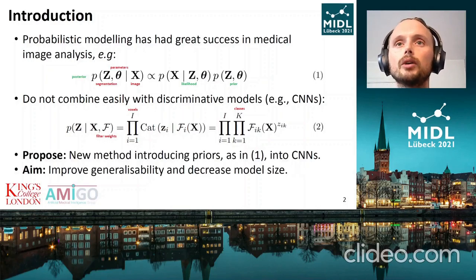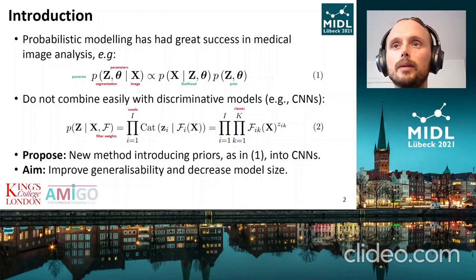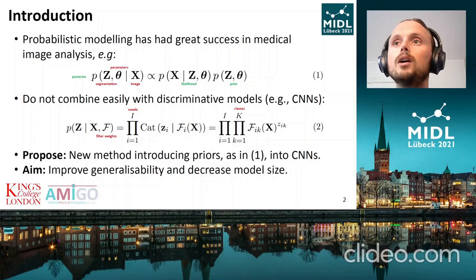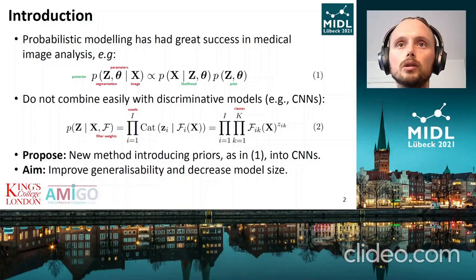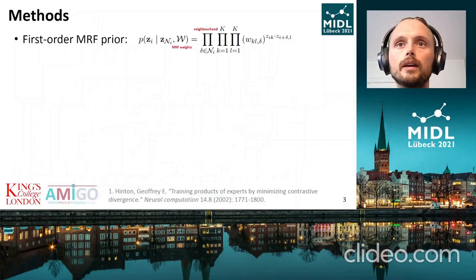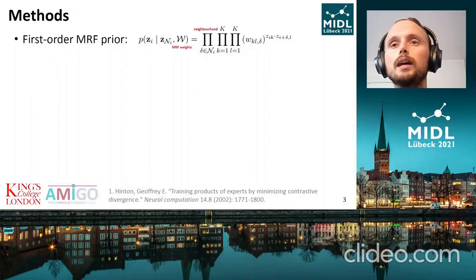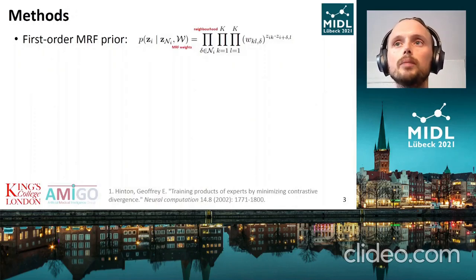In this work, we propose a new method for combining a prior with a CNN — more specifically a U-Net — hoping to achieve better generalizability and smaller models. We use a simple first-order MRF, but this could equally have been an atlas, a combination of the two, etc.